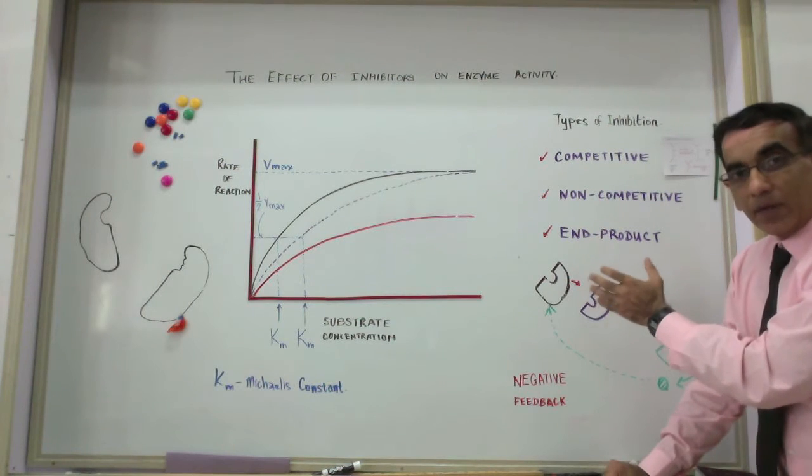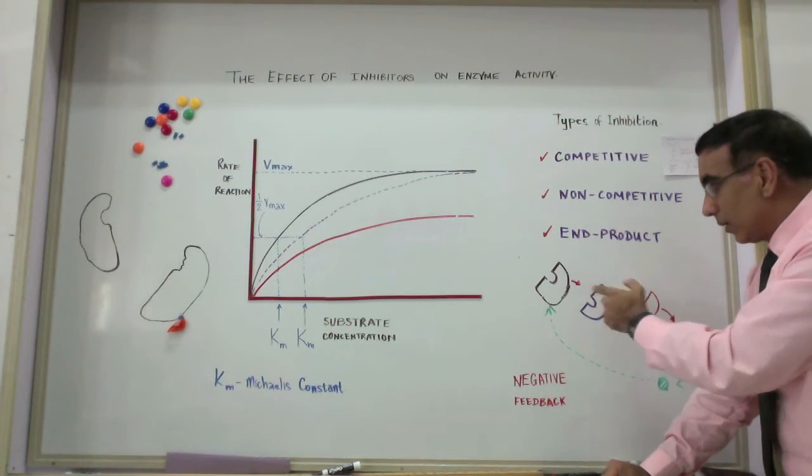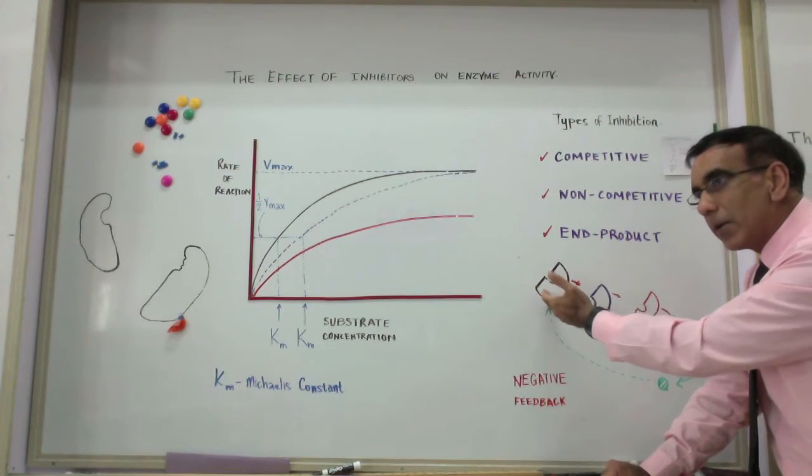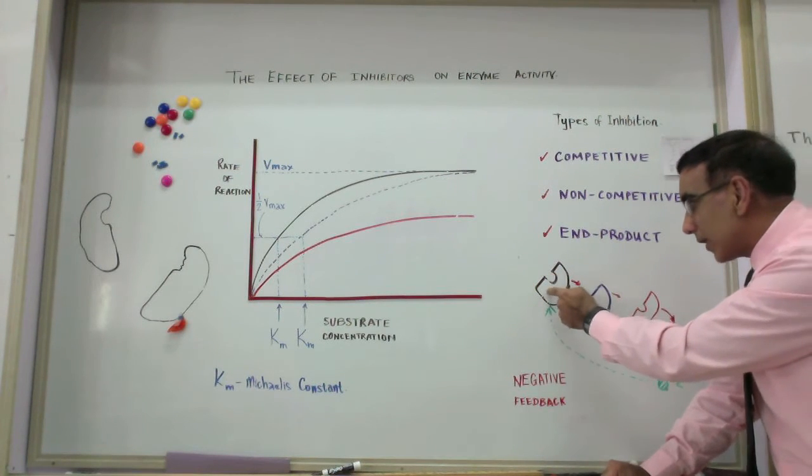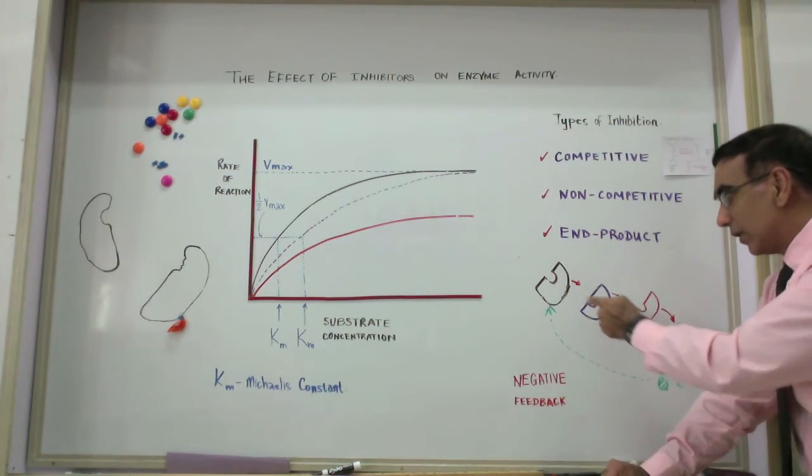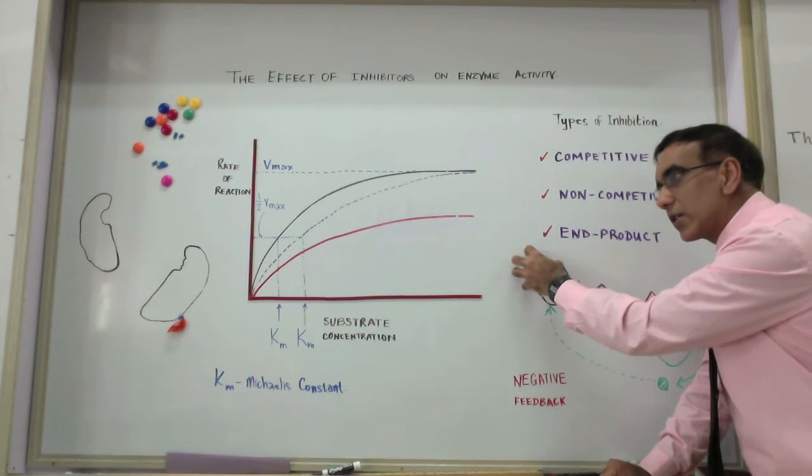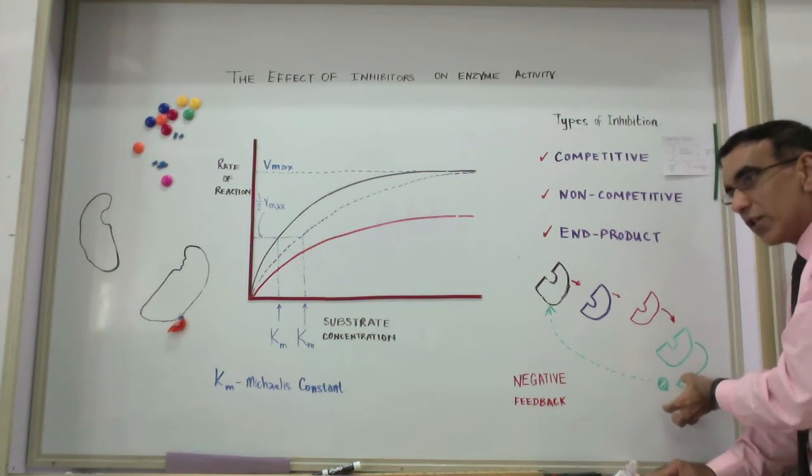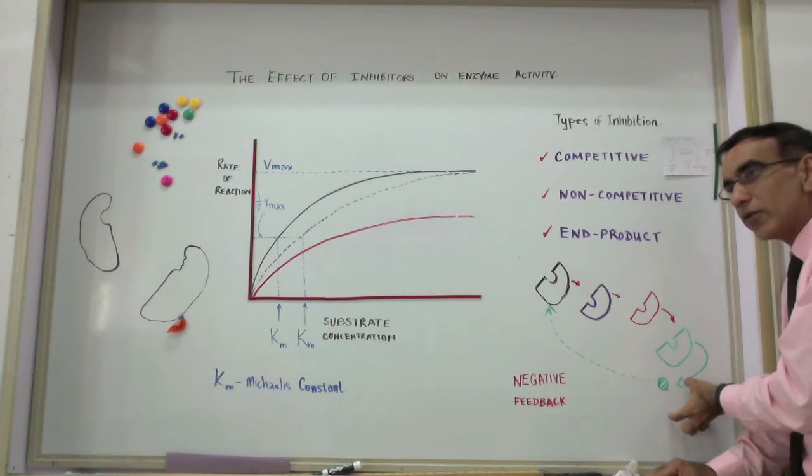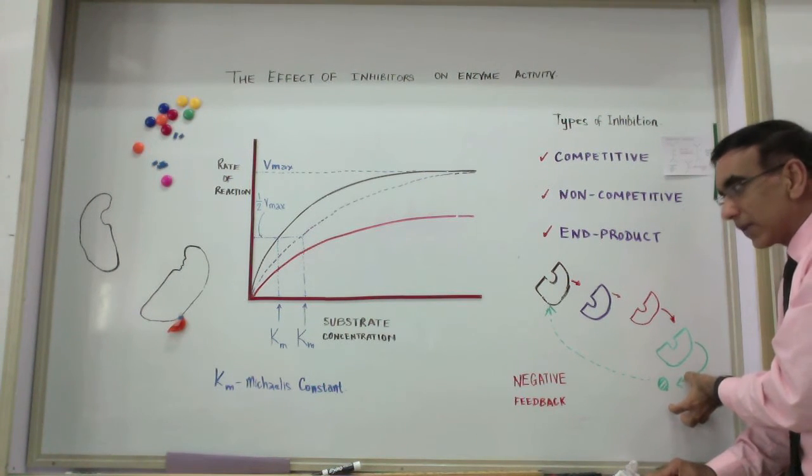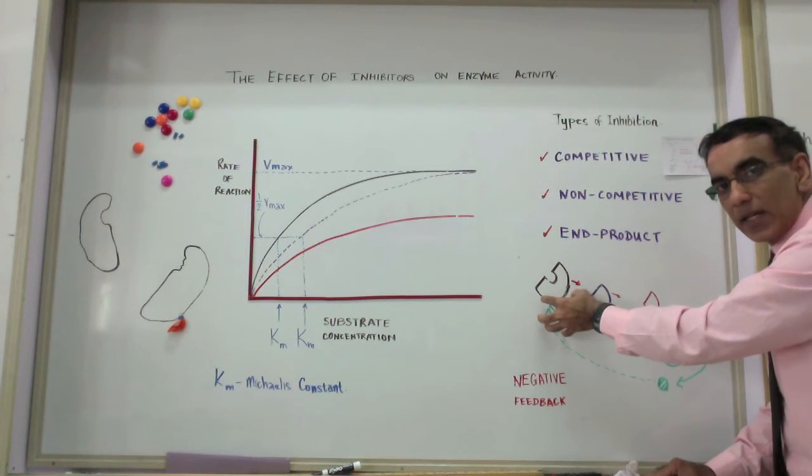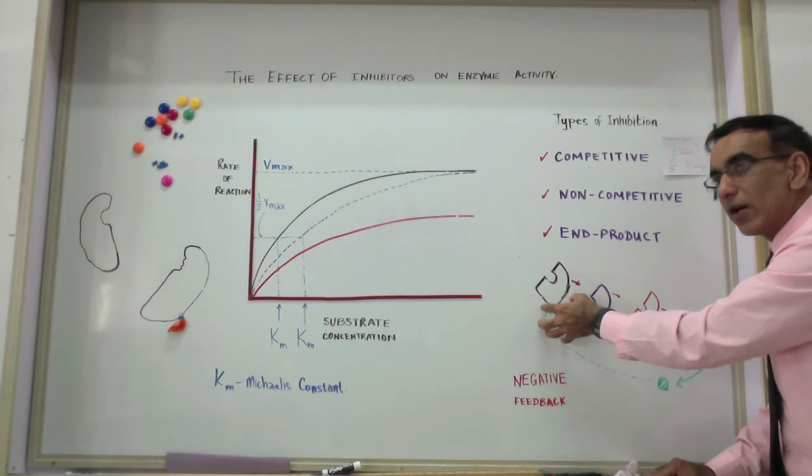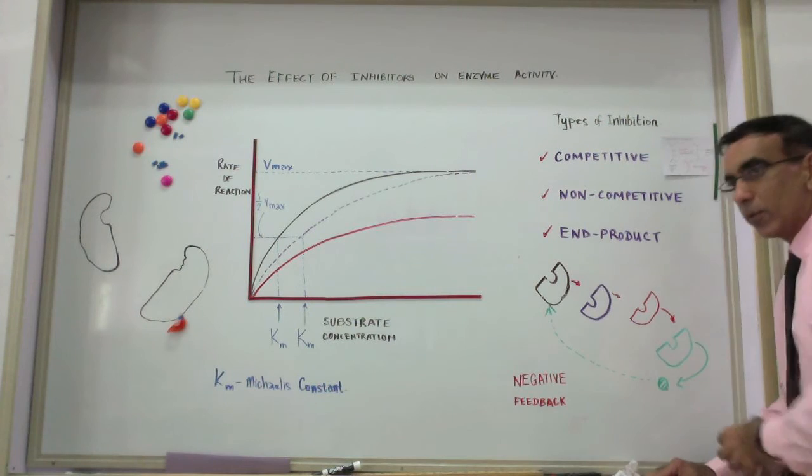Another type of inhibition is end product inhibition, where you may have a biochemical pathway where one enzyme works with a series of enzymes to convert a starting substance into an end product. Once that end product reaches a certain critical concentration, then the very product can bind with the first enzyme and act as a non-competitive inhibitor to shut down the pathway.